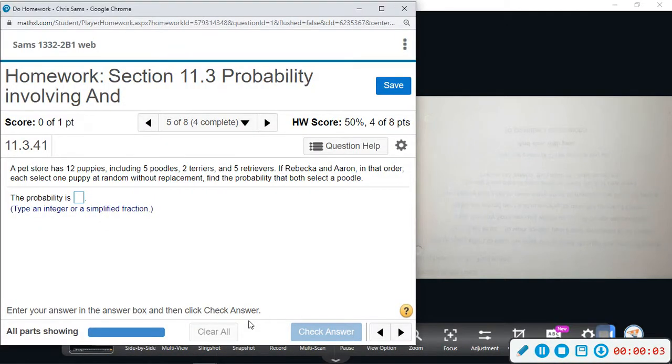Number five. A pet store has 12 puppies including five poodles, two terriers, and five retrievers. If Rebecca and Aaron, in that order, each select one puppy at random without replacement, find the probability that they both select a poodle.